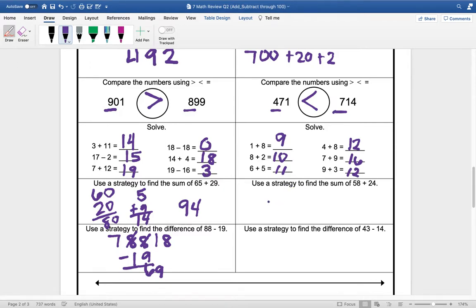We use a strategy to find the sum of 58 plus 24. So let's add our tens: 50 plus 20 is 70. And then we're going to add our ones: 8 plus 4 is 12. 70 plus 12 is 82, so our answer is 82.